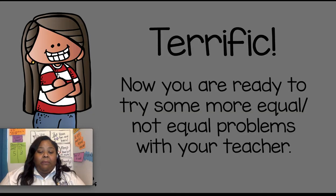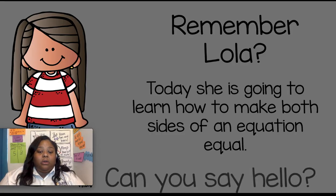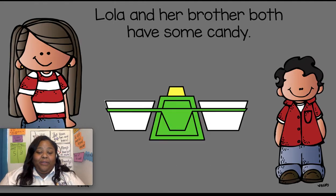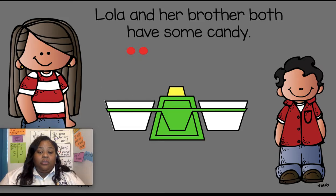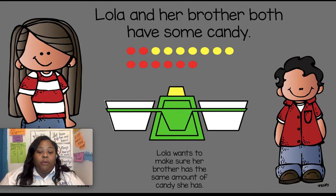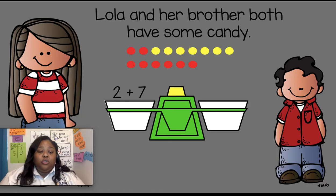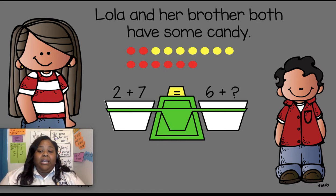Now we're ready to start some more equal and not equal problems, and we're also going to talk about how to make both sides of the equation equal. Lola and her brother both have some candy. Lola has two peppermints and seven butterscotch candies — two plus seven. Lola's brother has six peppermints but no butterscotch yet. Lola wants to make sure her brother has the same amount. So two plus seven equals six plus what number? How many more would he need to make the equations equal?